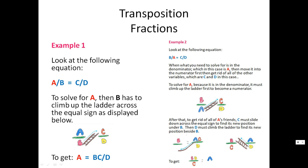After that, you get rid of all of a's friends. C must slide down across the equal sign to find its new position under b. Then d must climb the ladder to find its new position beside b. So here I have it in stages — you want to leave a by itself, and a must be in the numerator. Notice that c slides down and across the equal sign, and d climbs up the ladder to b, to get bd over c equals to a. Therefore, a is equal to bd over c. This will come with a lot of practice.